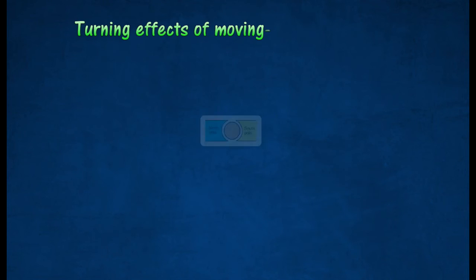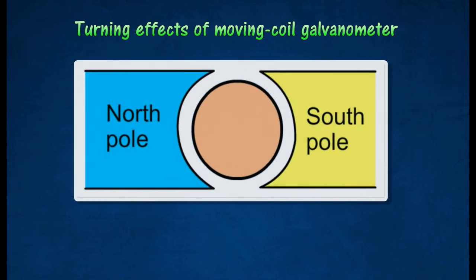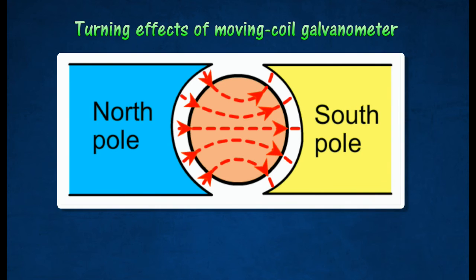The following diagram shows the turning effect of moving galvanometer. The soft iron cylinder at the center of the coil is fixed. The concave poles of the magnet together with the soft iron cylinder provide a radial field. The radial field enables the angle of deflection of the coil to be directly proportional to the current entering it.